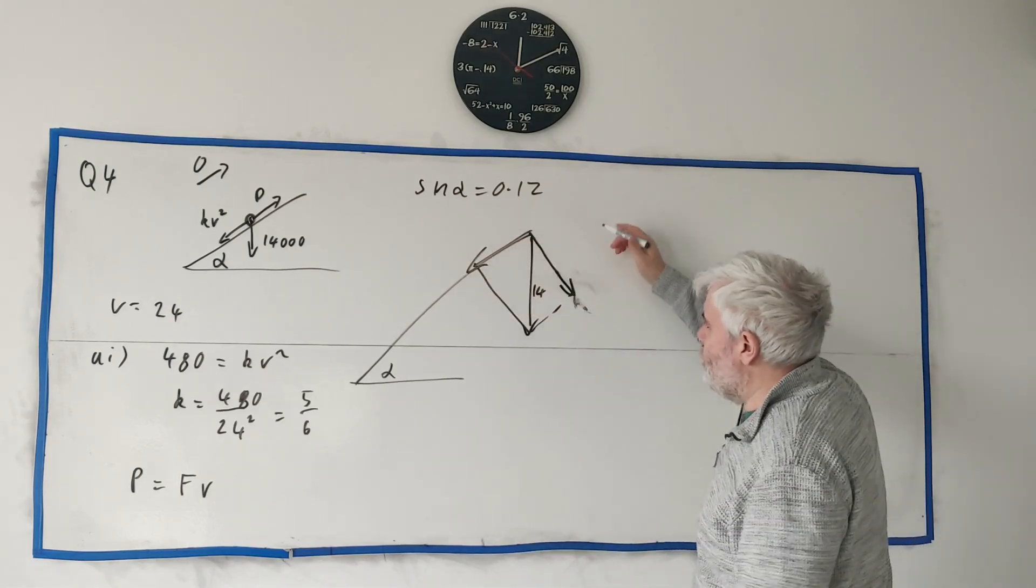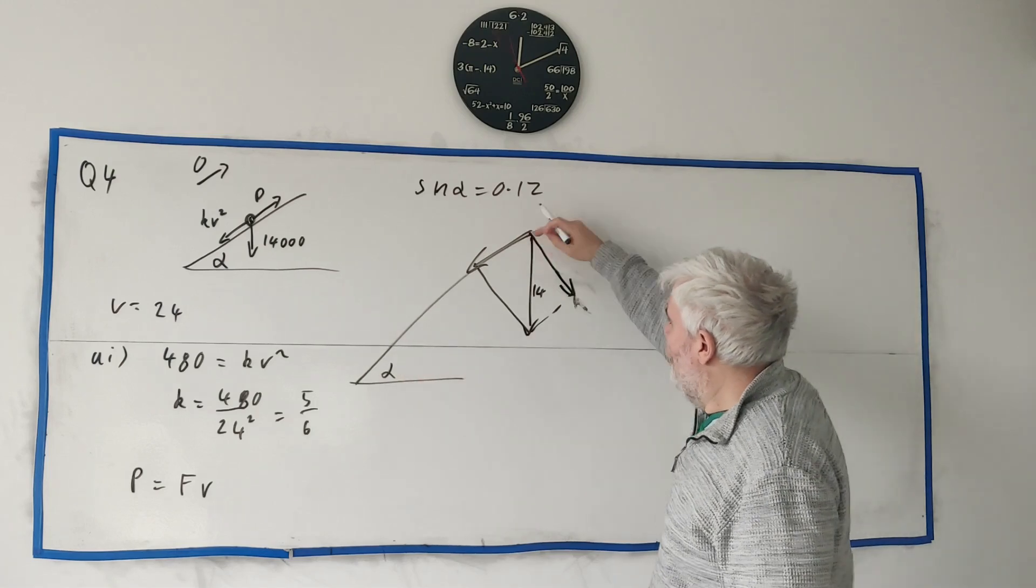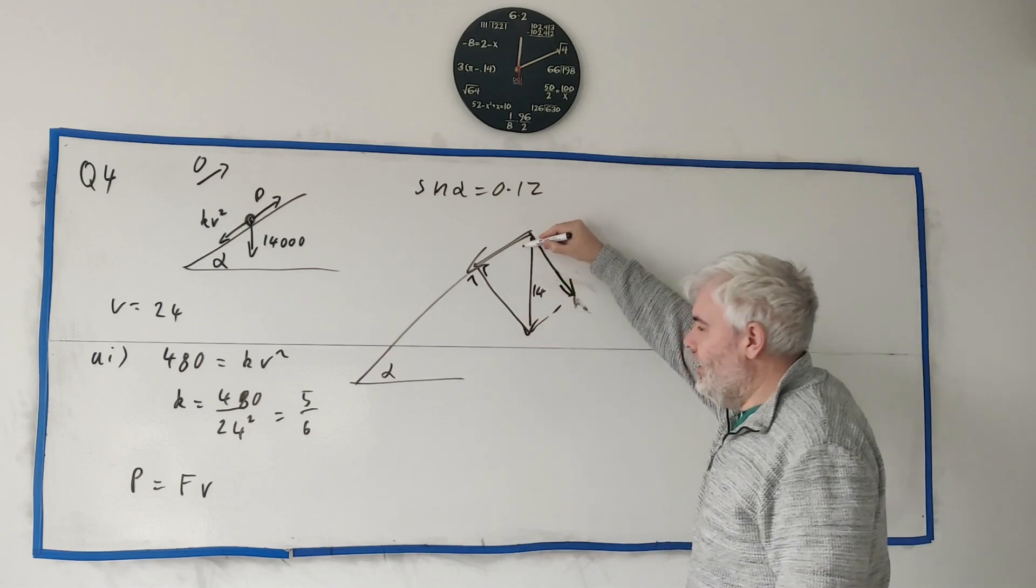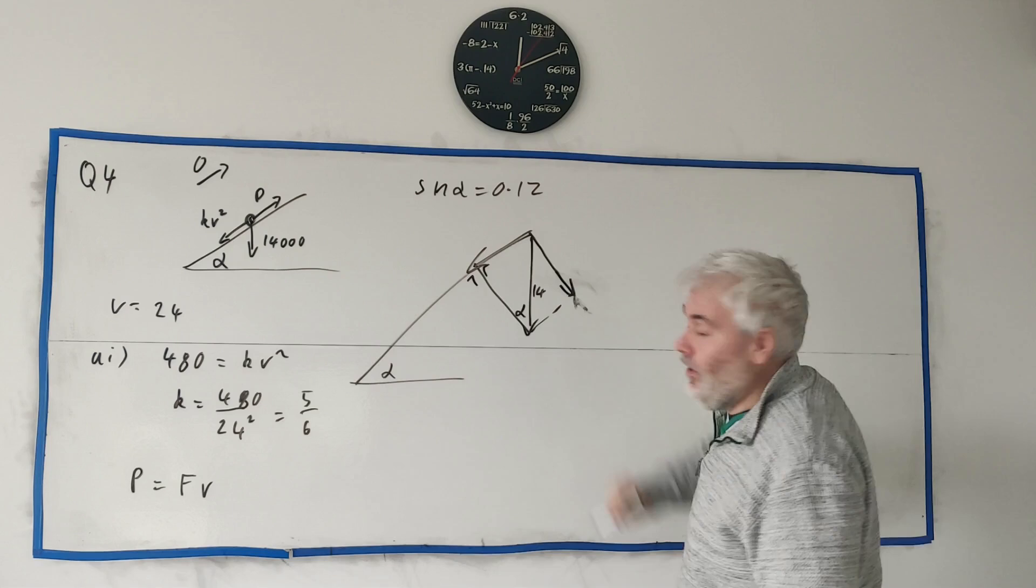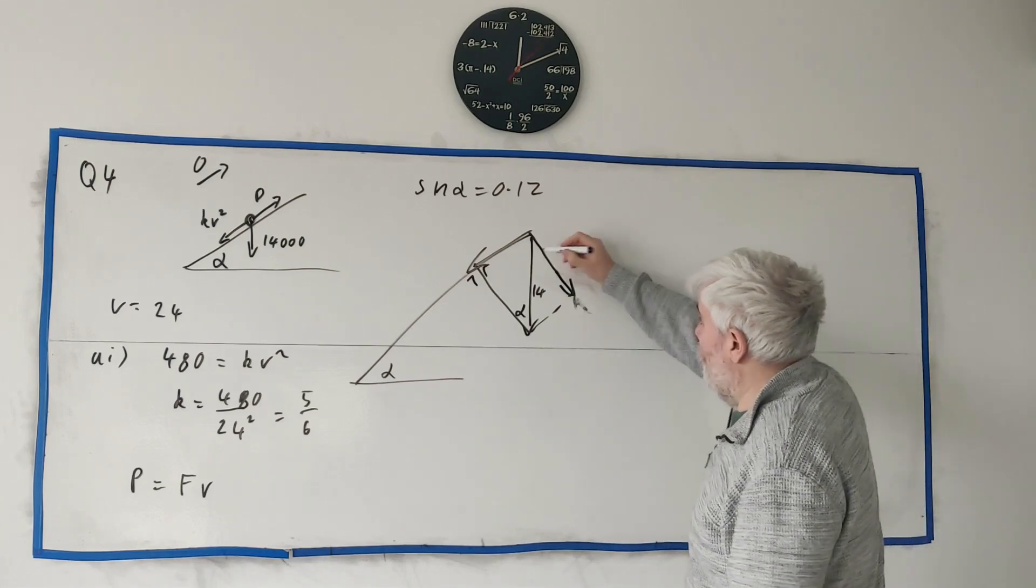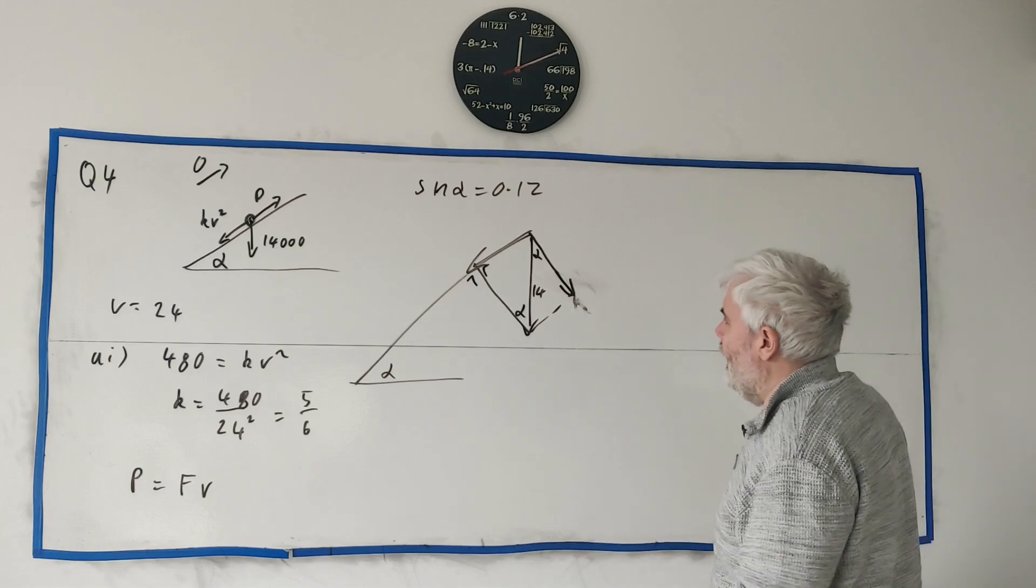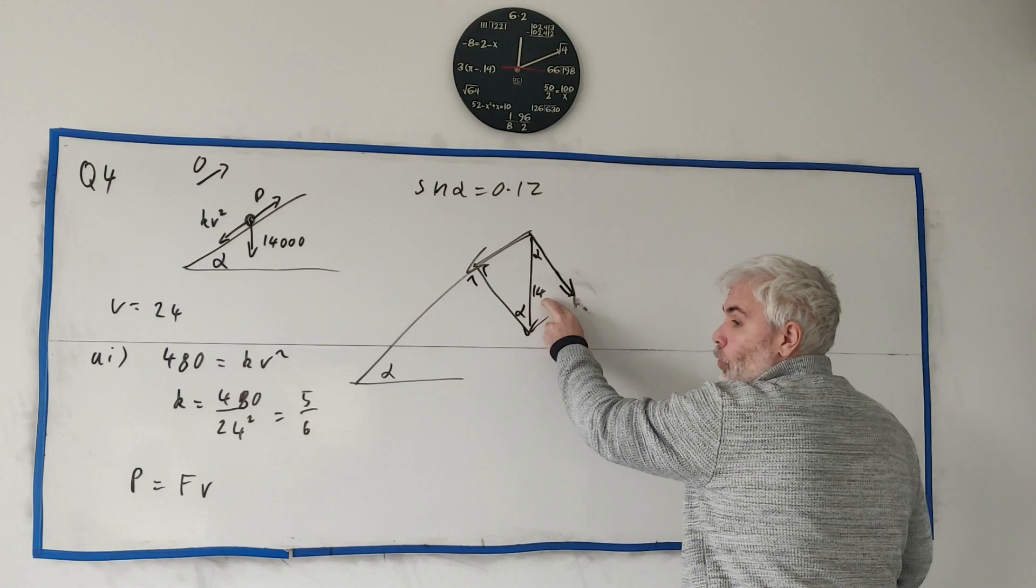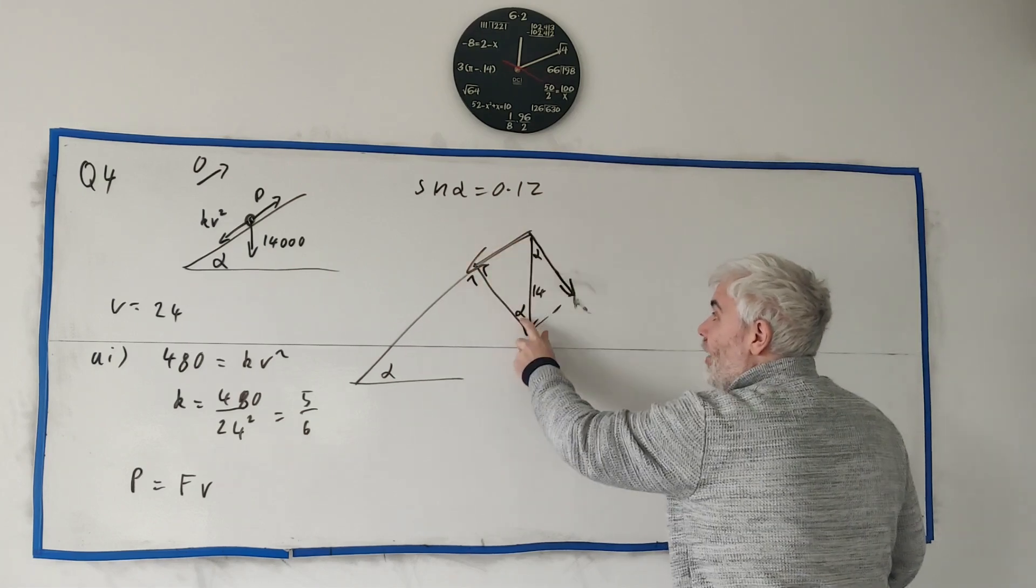So what is this force here? We just need to use a bit of trigonometry. If this is alpha, this is 90 degrees. This is 90 degrees. This angle here is 90 minus alpha. Which means this down here is alpha again. Or if you'd rather, this up here is alpha. Whichever way you look at it, we want this length. We know this length is 14,000. We know this angle.